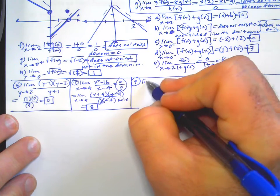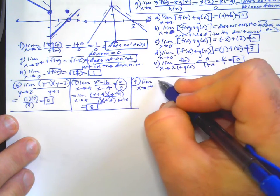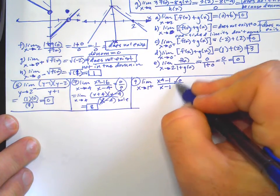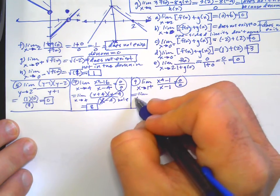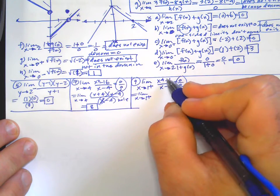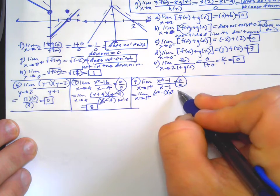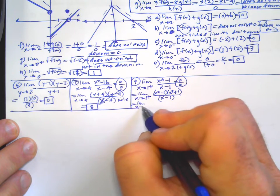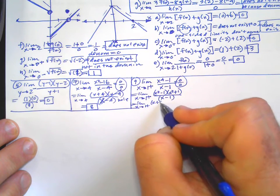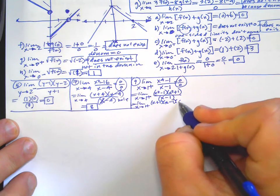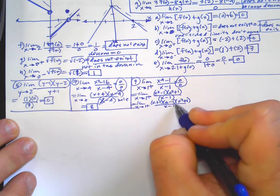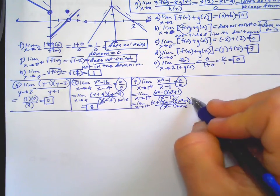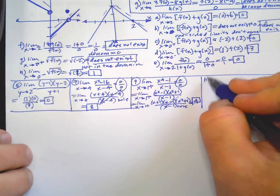Number 9: limit as X approaches 1 from the right side of (X to the 4th minus 1) over (X minus 1). That gives 0 over 0, so we should try and factor it. This is a difference of squares, which then has another difference of squares in it — X plus 1 times X minus 1. You can't factor the sum of squares, but it doesn't really matter anyway. Here's the hole in the graph, and then you're going to plug 1 back in — this is going to be 2 times 2, which is 4.